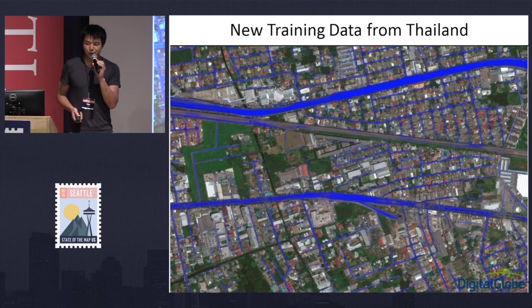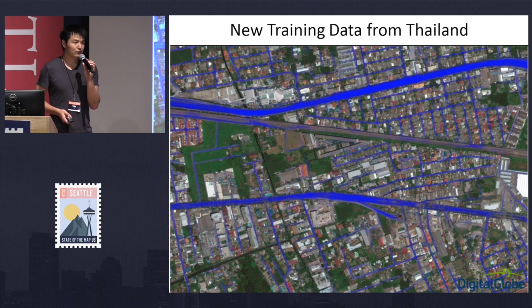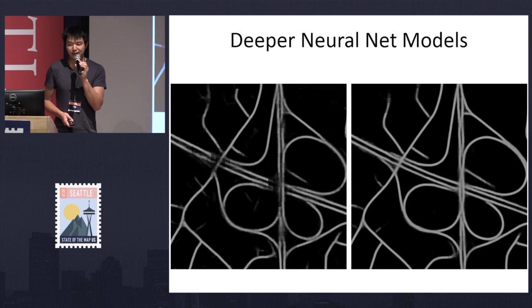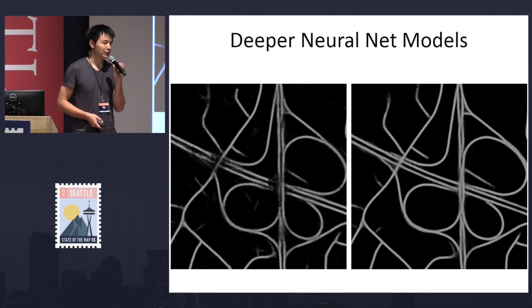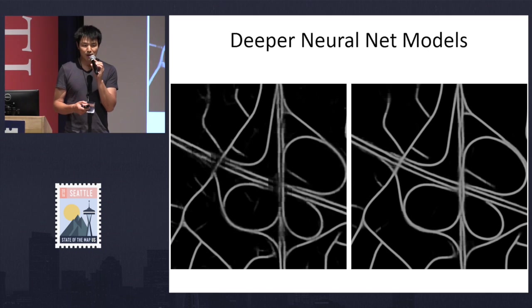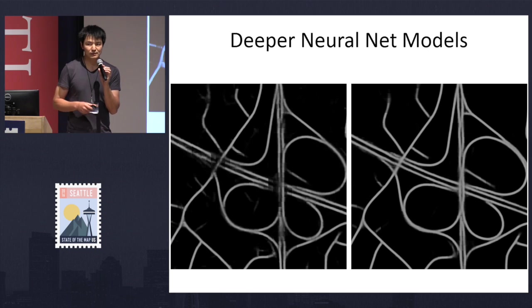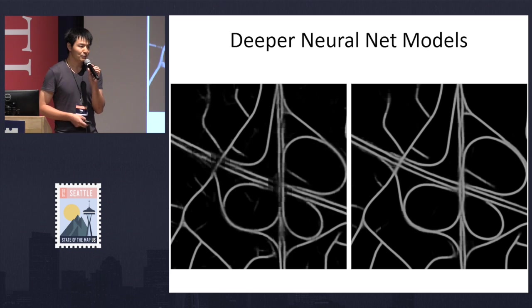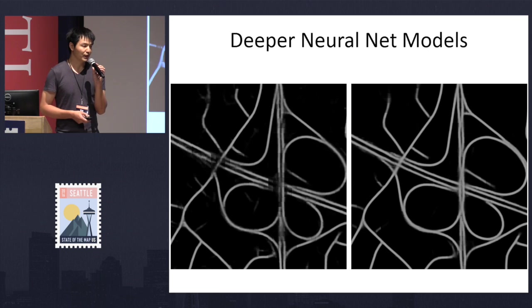A simple improvement you can do is just to develop better training data for a local area, and you can see that it already greatly improves the detection accuracy. In addition to training data, we also tried a lot of improvements to help make better predictions on the roads. The original model from Vladimir's dissertation was a neural net with three to five layers, while on the right-hand side is a much deeper neural net with 16 layers, and you can see it does a much better job compared to the old model.